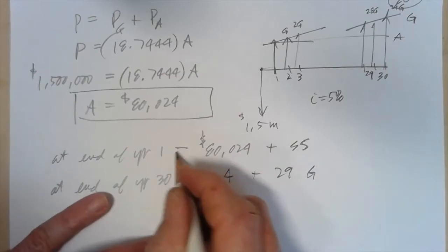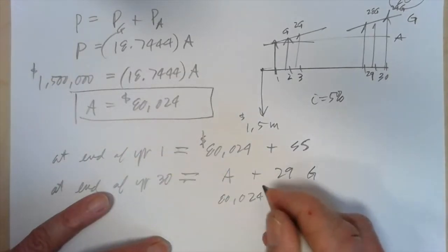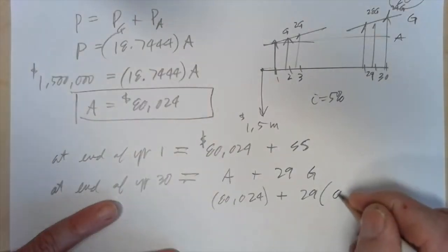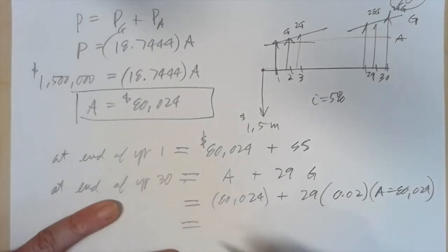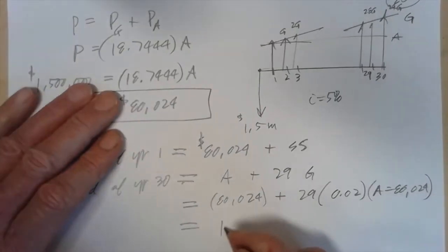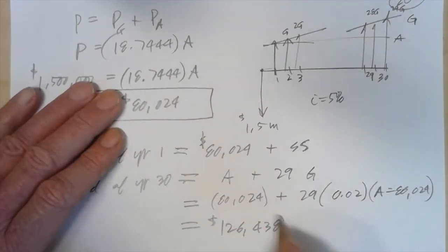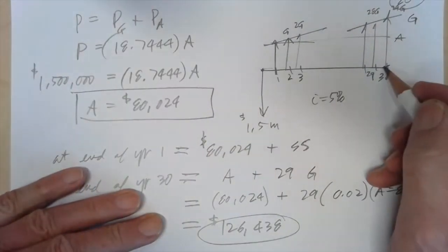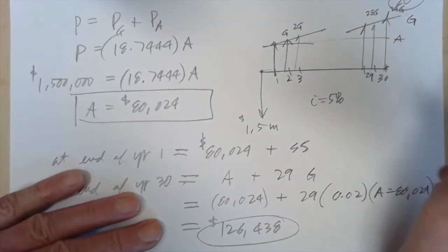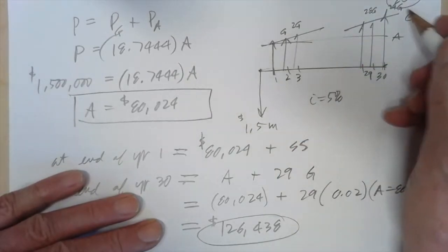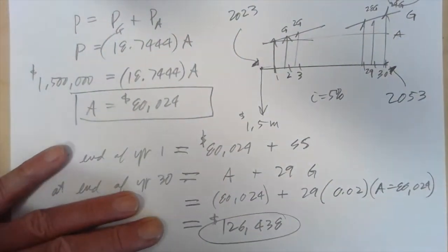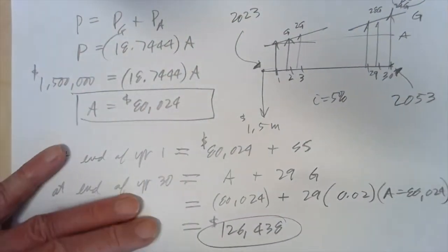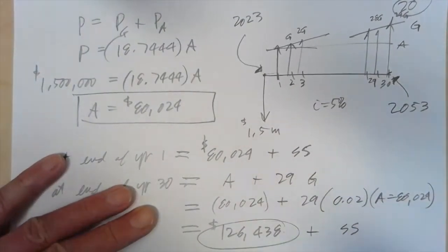So this is going to be equal to 80,024 plus 29 times 0.02A, which is 80,024. So what that is equal to is $126,438. And you go, oh my gosh, that's an enormous amount of money. But folks, remember, because of inflation, and the Federal Reserve has a target of 2 or 3% inflation a year, the purchasing power will be much less in the year 2053 than the year 2023. And this is a small incremental increase. So that's going to be $126,438 plus Social Security, whatever that is in the future.